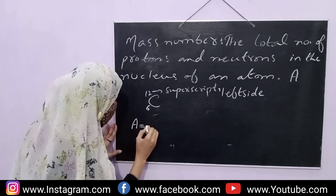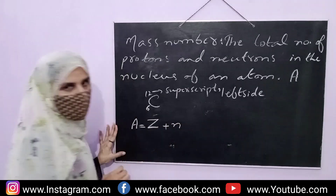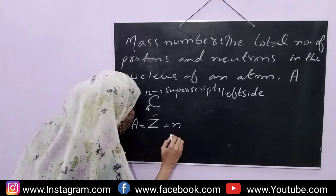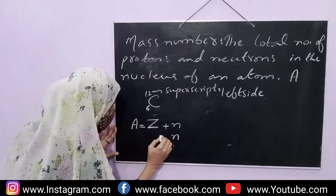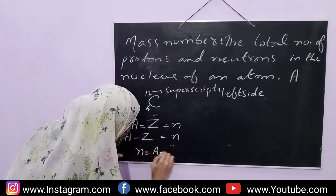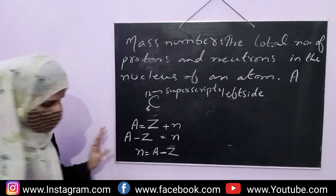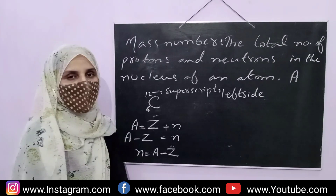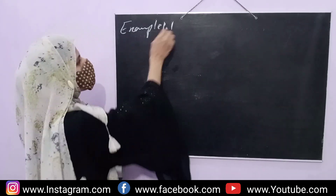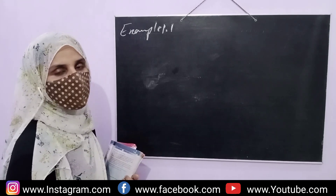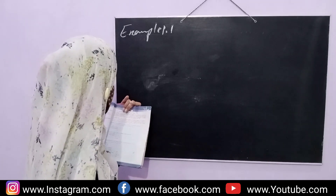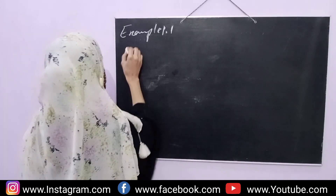The formula for mass number is: A equals Z plus N, where A is mass number, Z is atomic number, and N is neutron number. For example, if any element has number of protons 11 and number of neutrons 12, find out its atomic number and atomic mass.